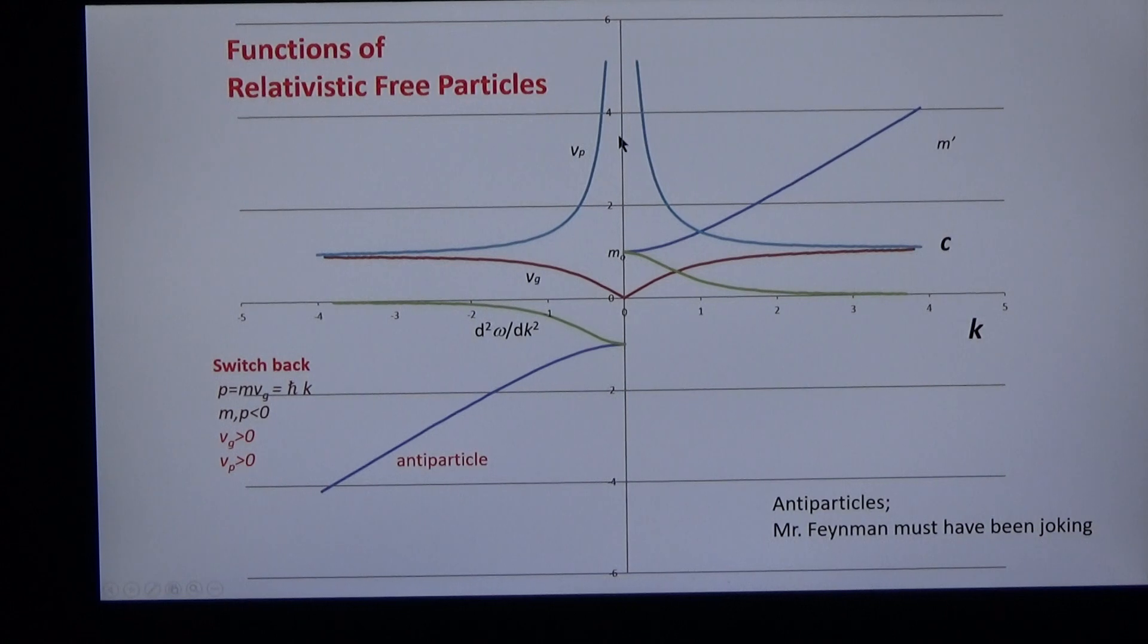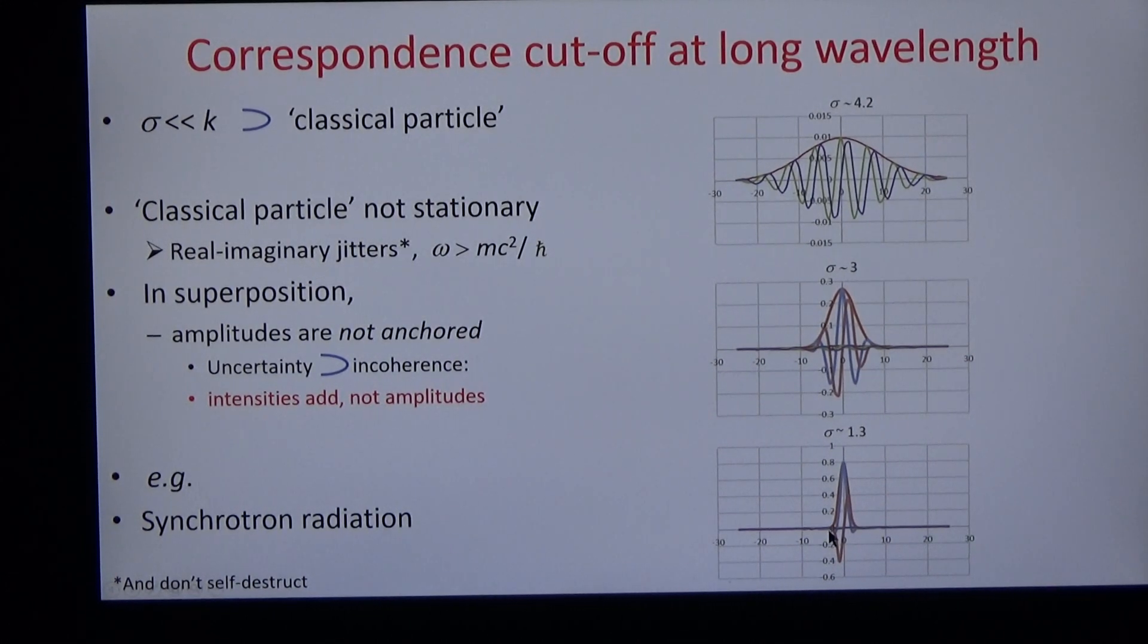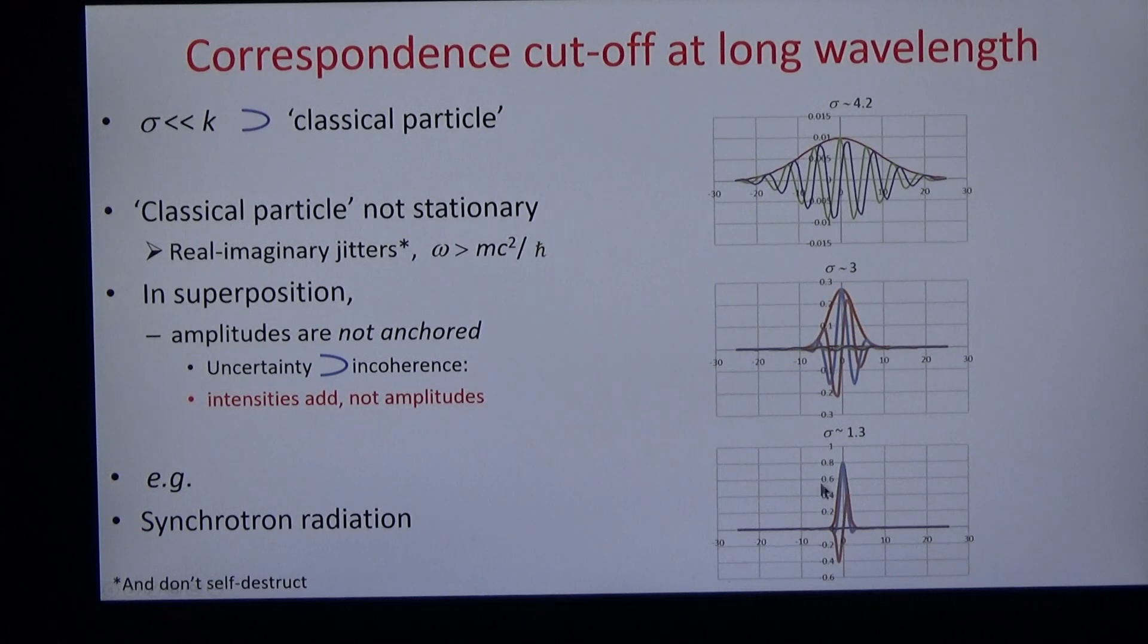The singularity in the phase is in fact cut off and this is illustrated in these three diagrams. When sigma is less than k, the wave is squashed flat. Intensities add rather than amplitudes.